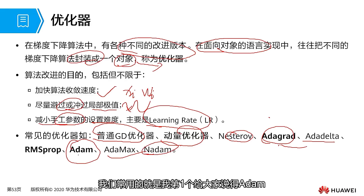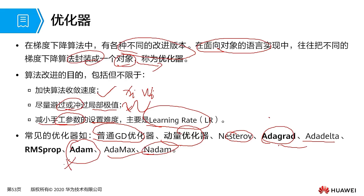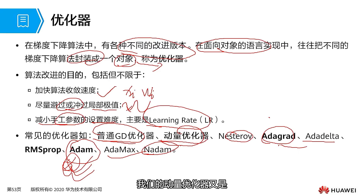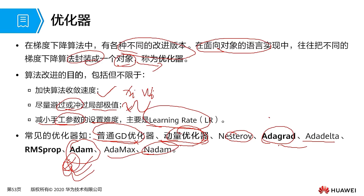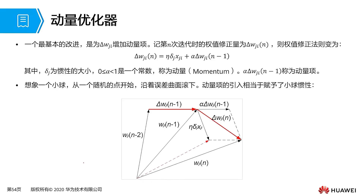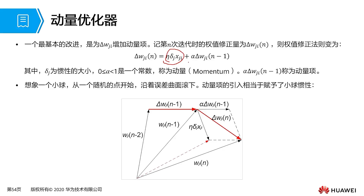After introducing our regular optimizer, let's see how the momentum optimizer has improved based on its shortcomings, why the momentum optimizer cannot meet our current needs, and then how AdaGrad, AdaDelta, RMSProp, and our Adam optimizer evolved. Let's first look at the momentum optimizer. The momentum optimizer is based on our backpropagation algorithm, delta WG. After this we added a momentum term, the purpose of this momentum term is to give it a certain exit velocity — certain inertia — to make training faster, to find our optimal parameter.